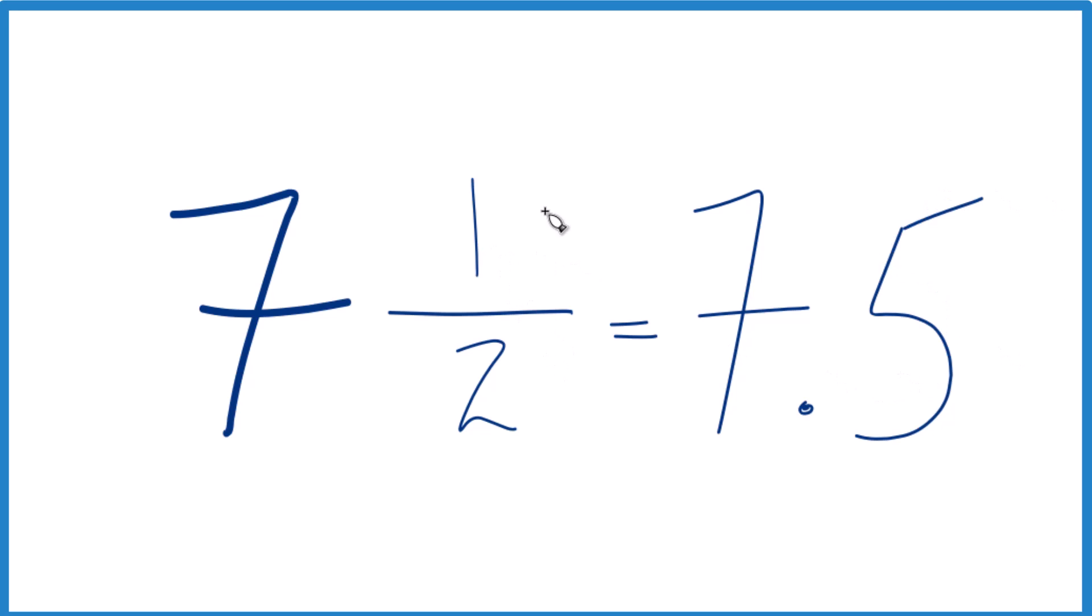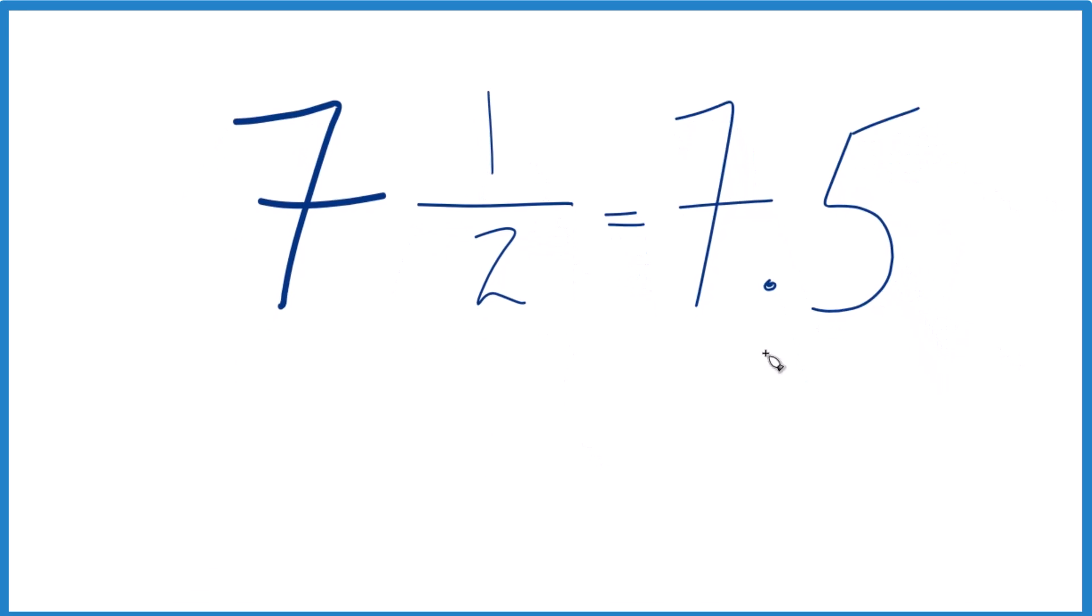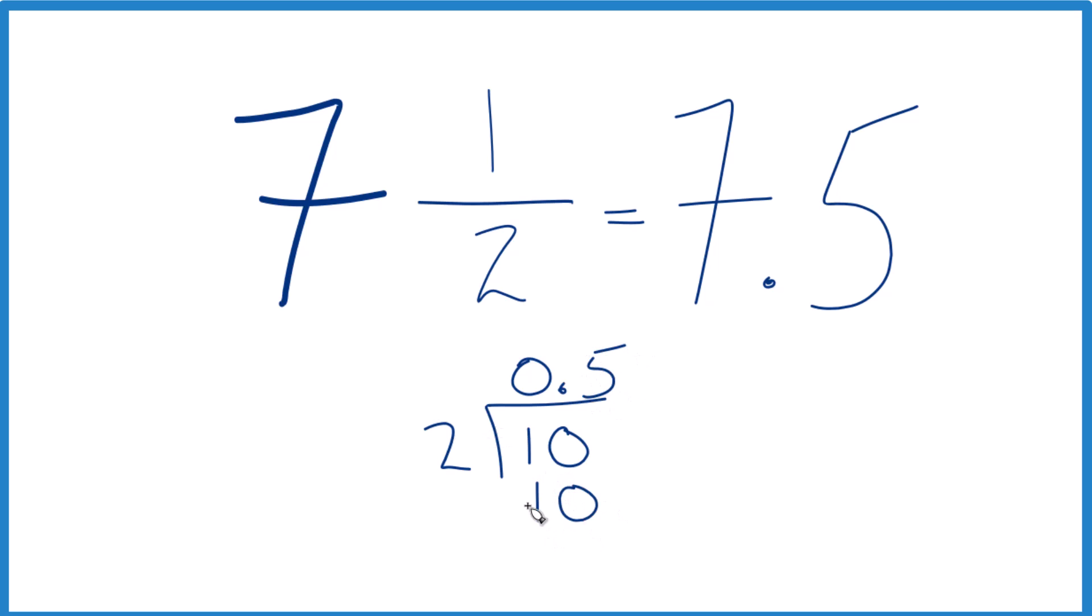But if you didn't know that 1/2 equaled 0.5, you could take 1 and divide it by 2. So 2 doesn't go into 1. Let's call this 10 and then put a 0 with a decimal point here. Now 5 times 2, that's 10. Subtract, no remainder. So 1/2 is equal to 0.5.